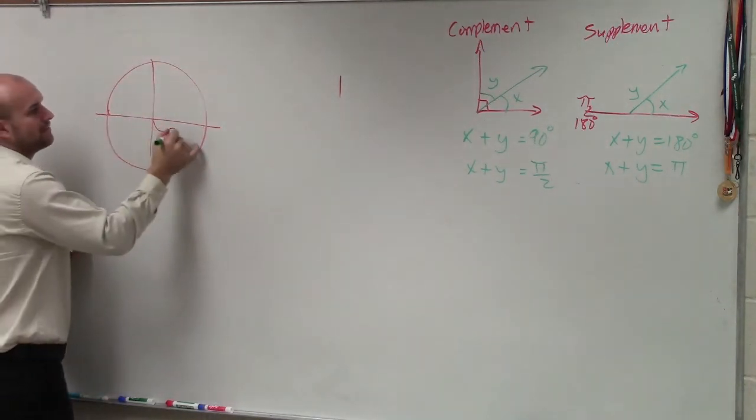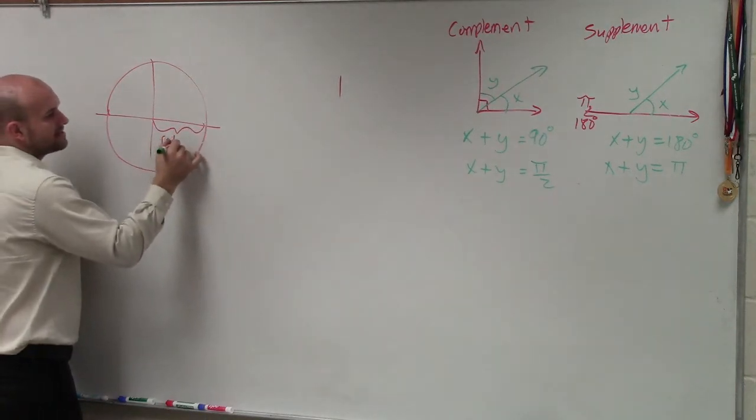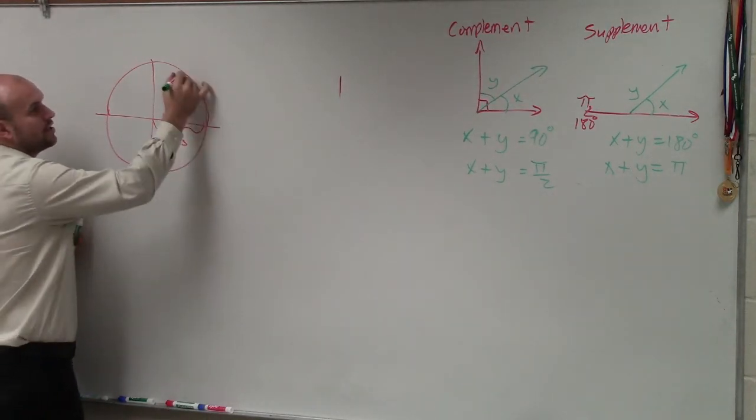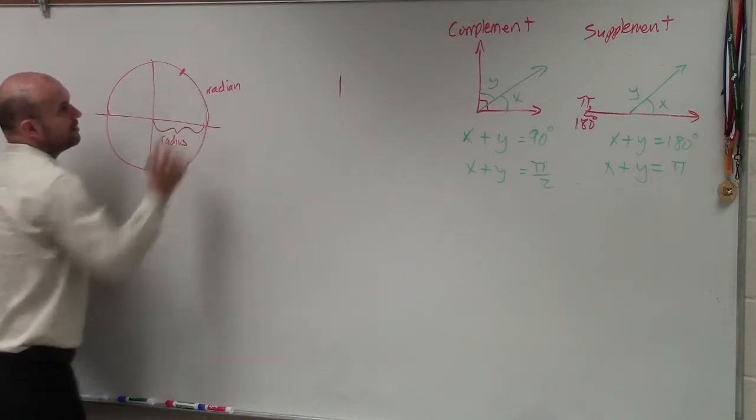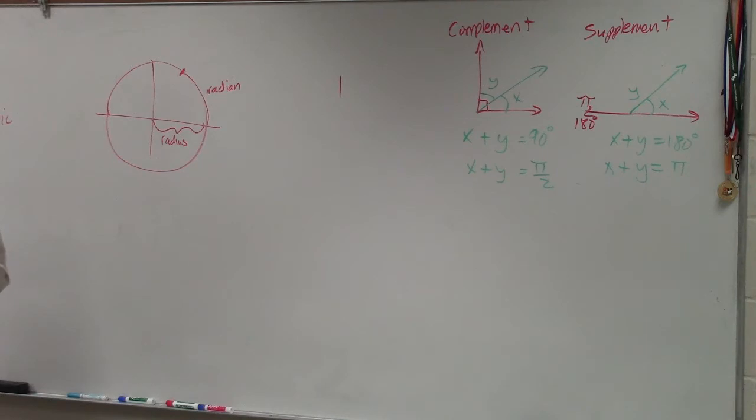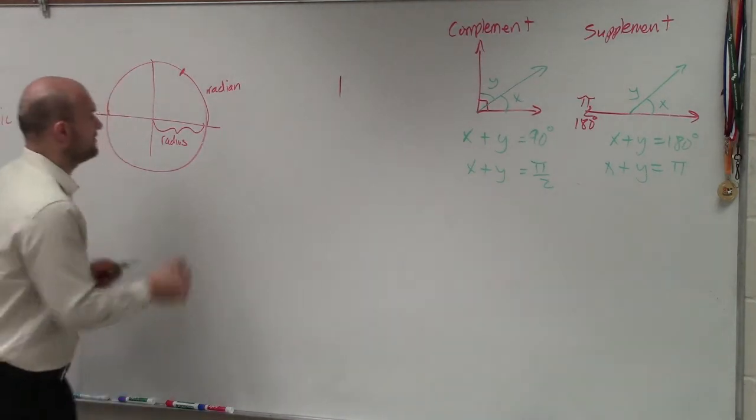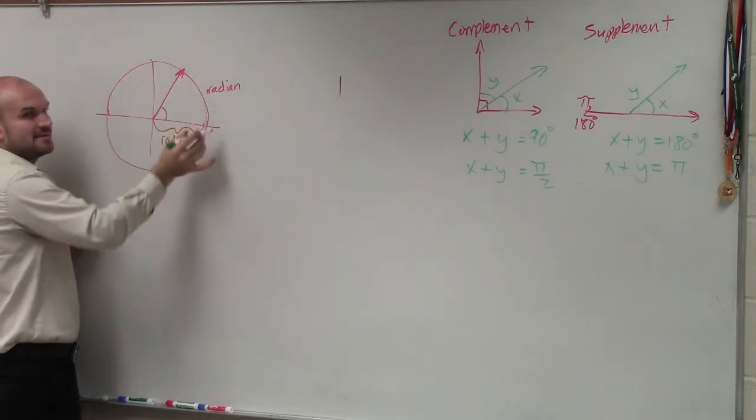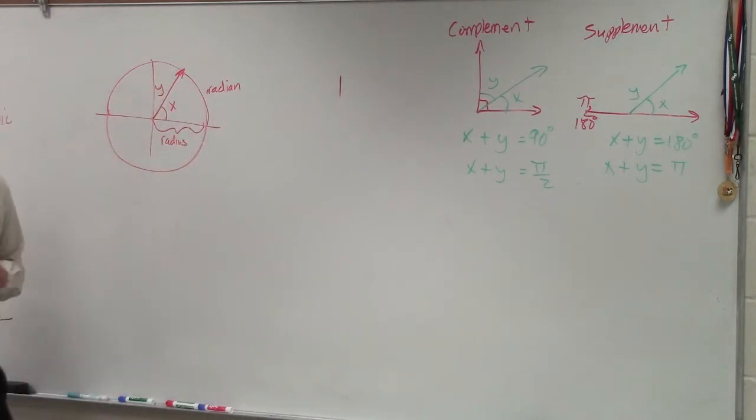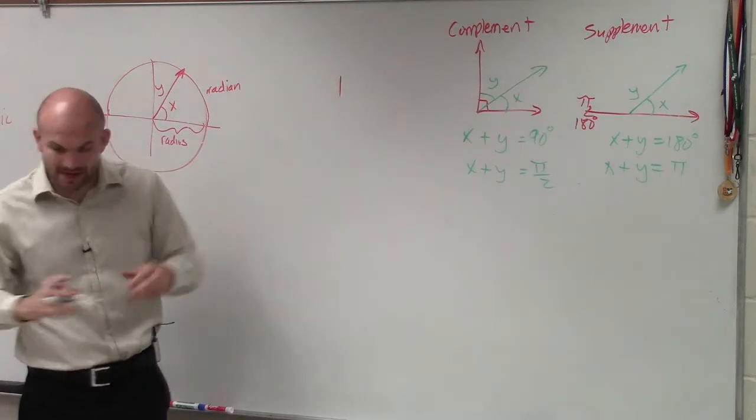Remember, if you have a circle, that's what we call the radius. You take that distance, wrap it around the circle, that distance is what we call a radian. So what they're asking to do is, if here is an angle that has a measure of 1 radian, what is the other angle? Remember, we're talking about radians.